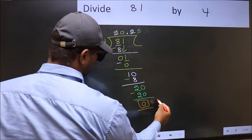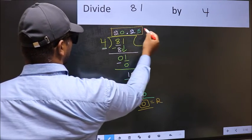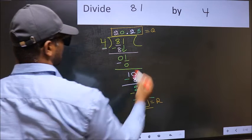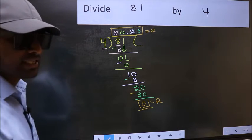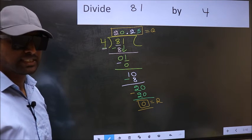So this is our remainder, and this is our quotient. Did you understand where the mistake happens? You should not do that mistake.